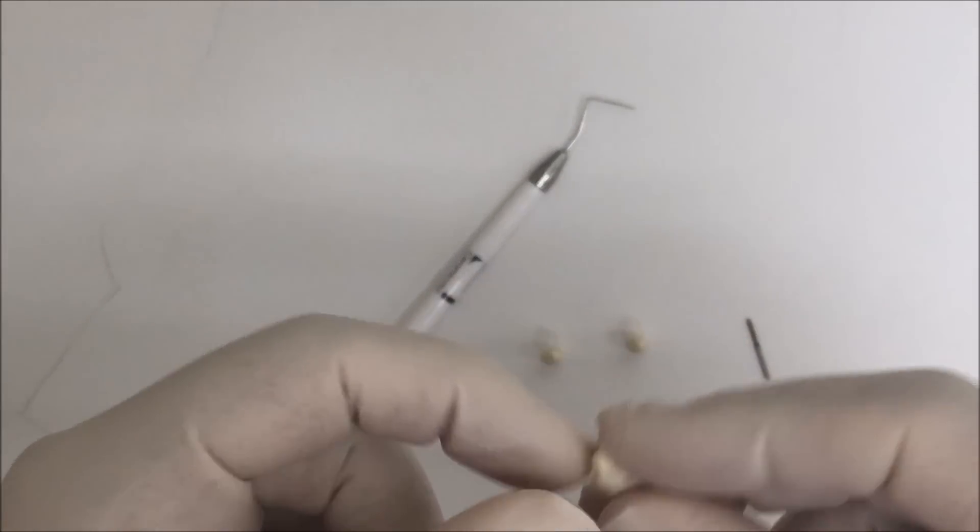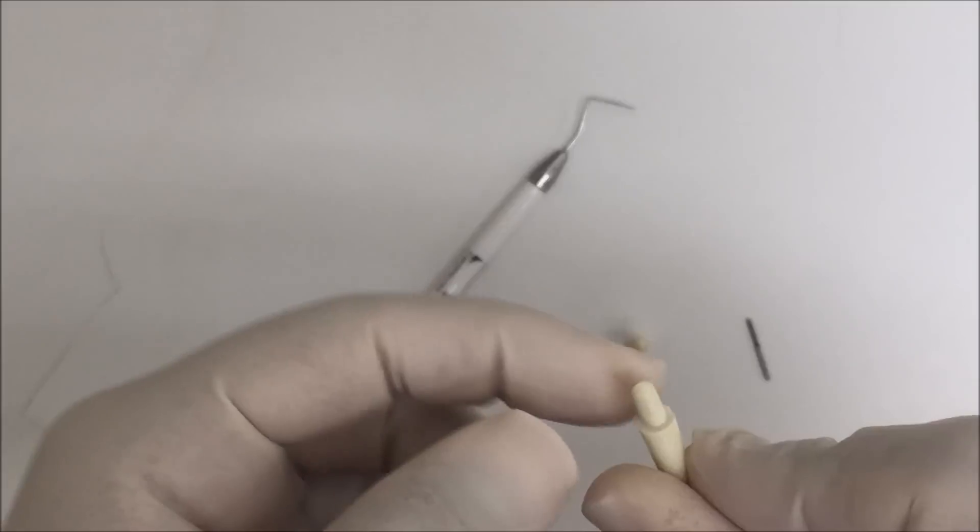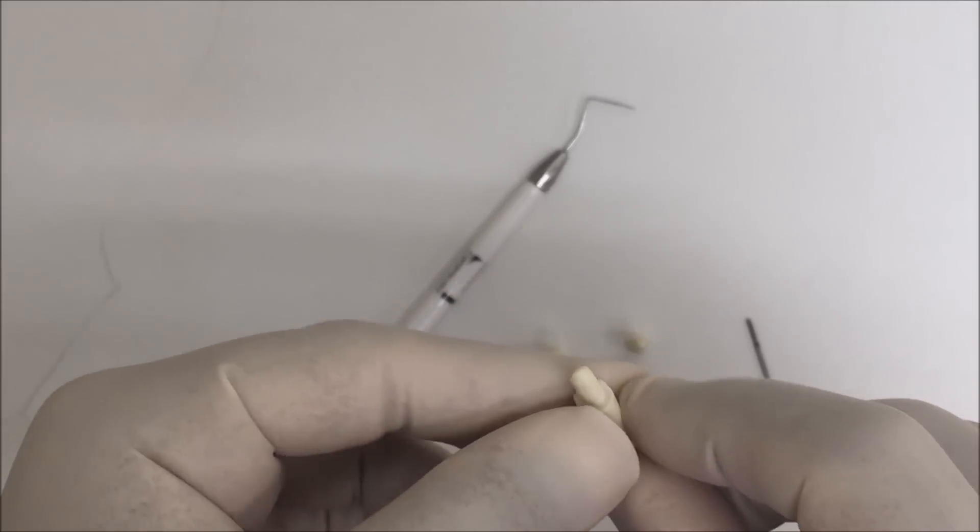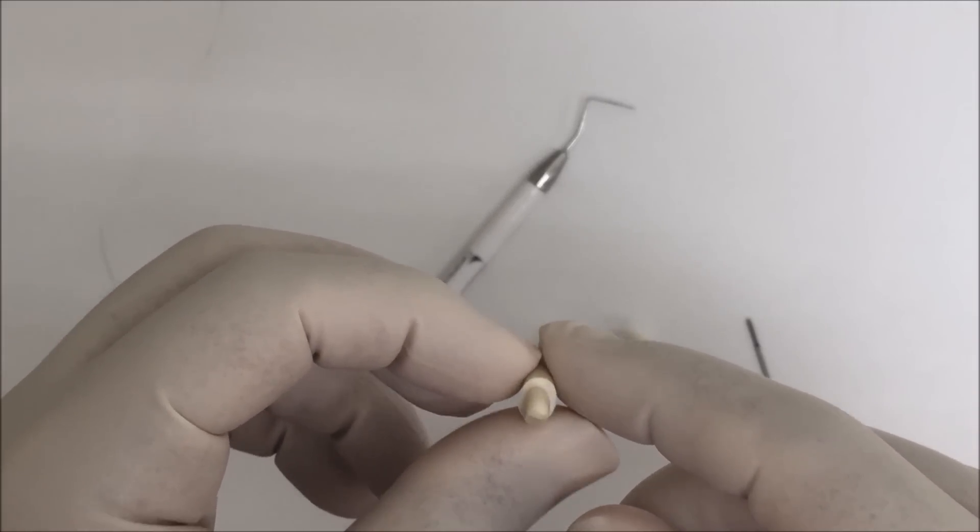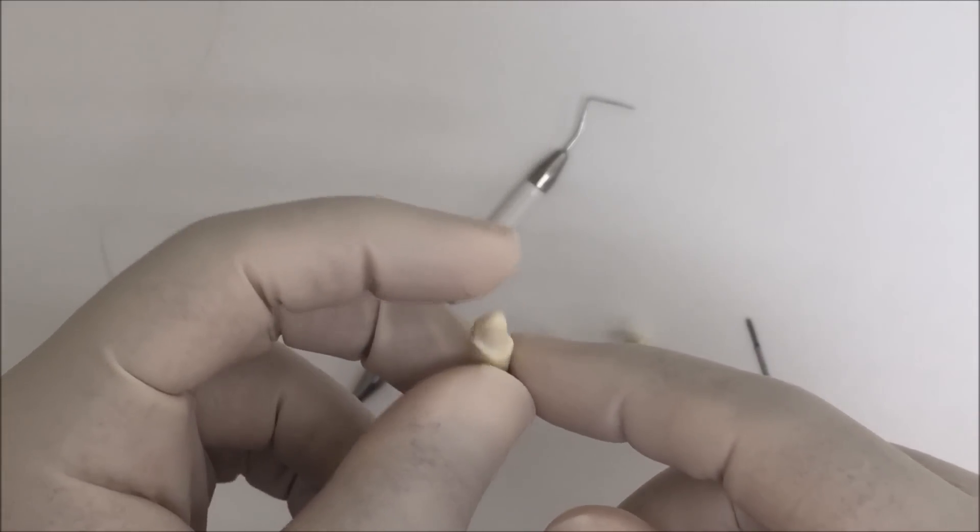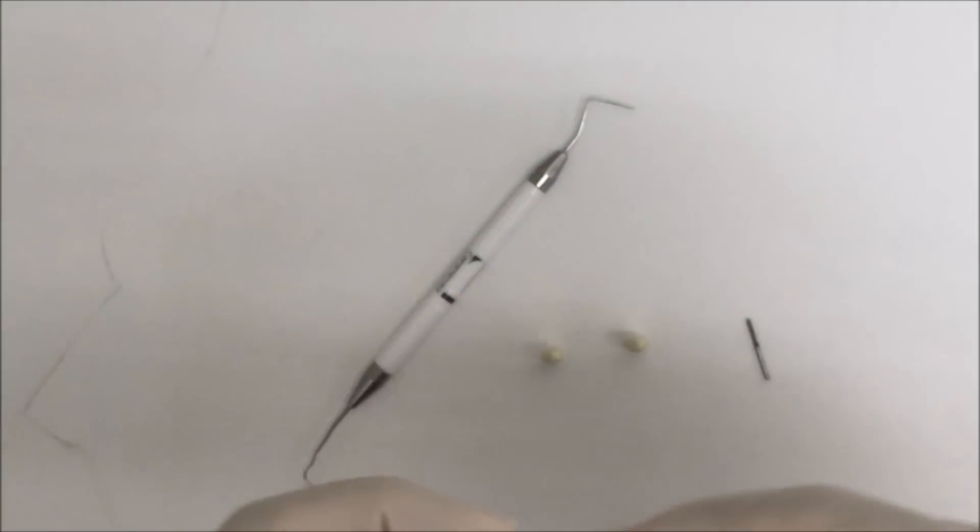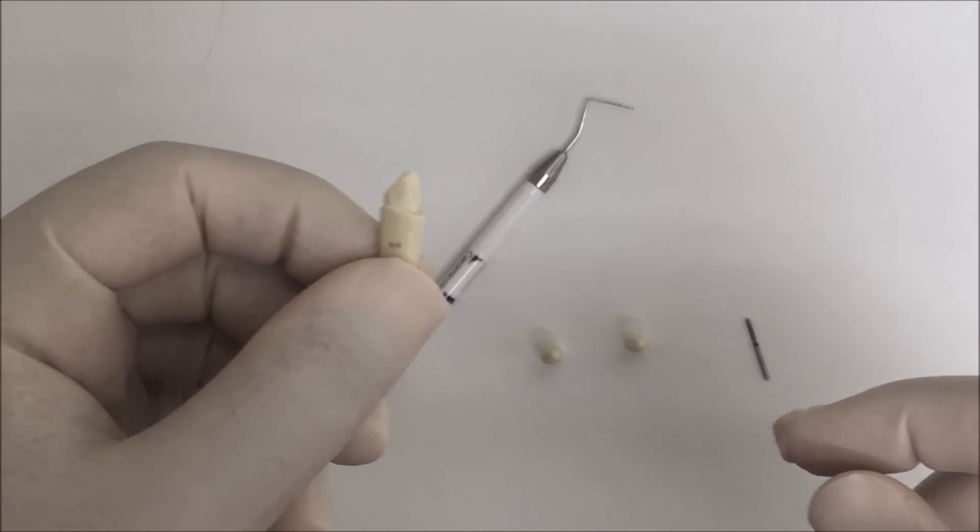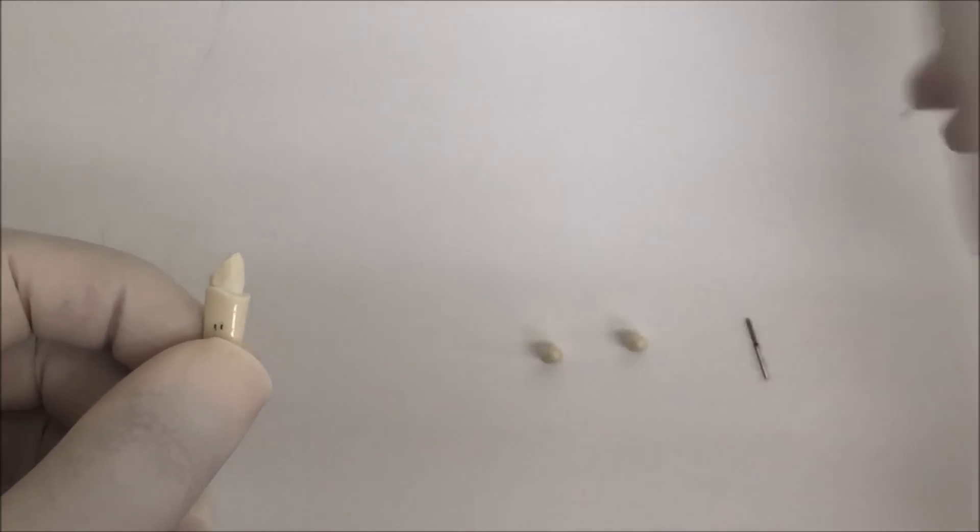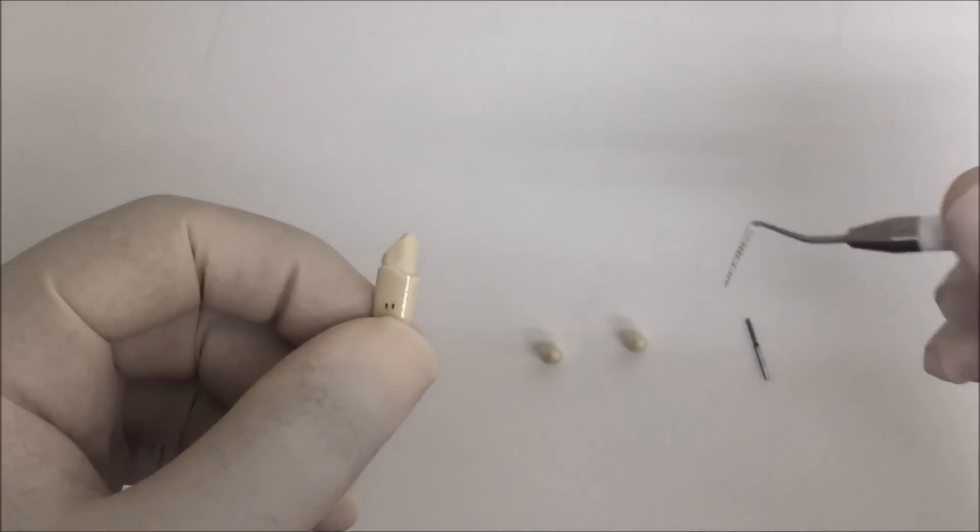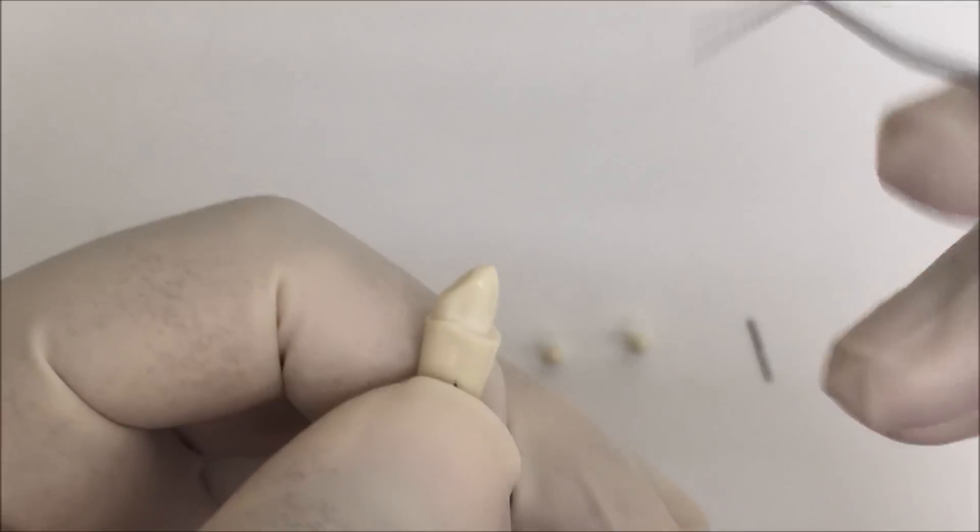I'm showing you today how to detect the presence of undercut in your preparation. There are three ways to check that. The first way is using an instrument or your bur by putting the instrument.